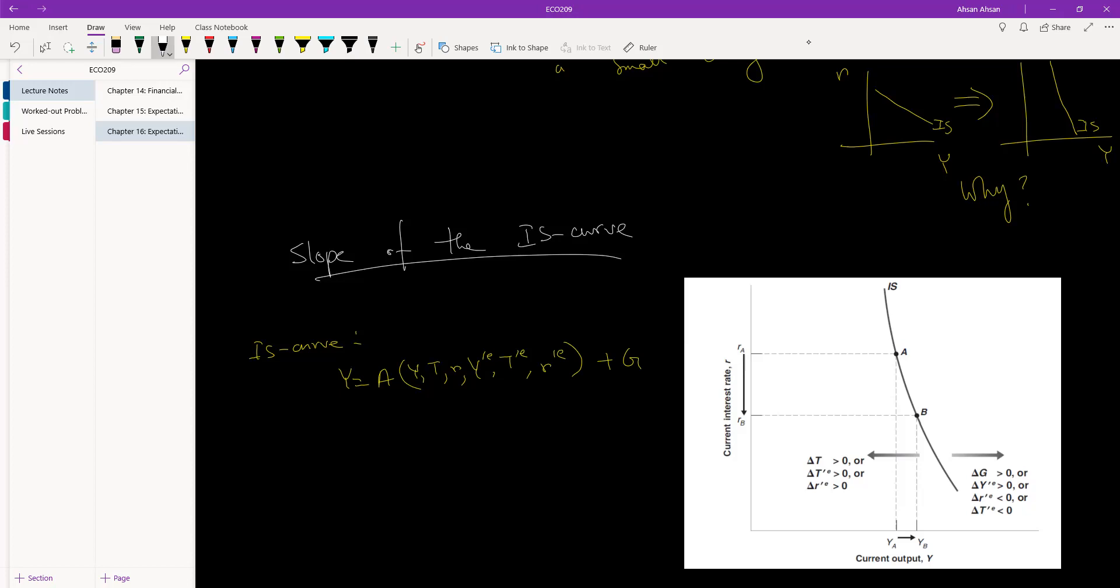Okay, so suppose the government does an expansionary monetary policy, which means that r falls from, let's say, from r_a to r_b.